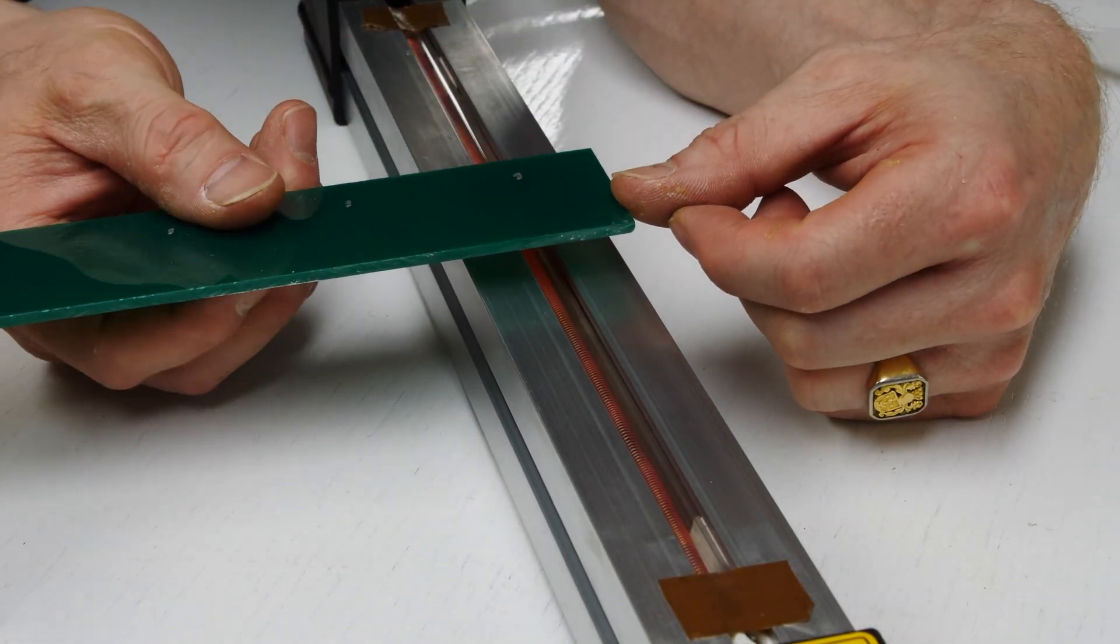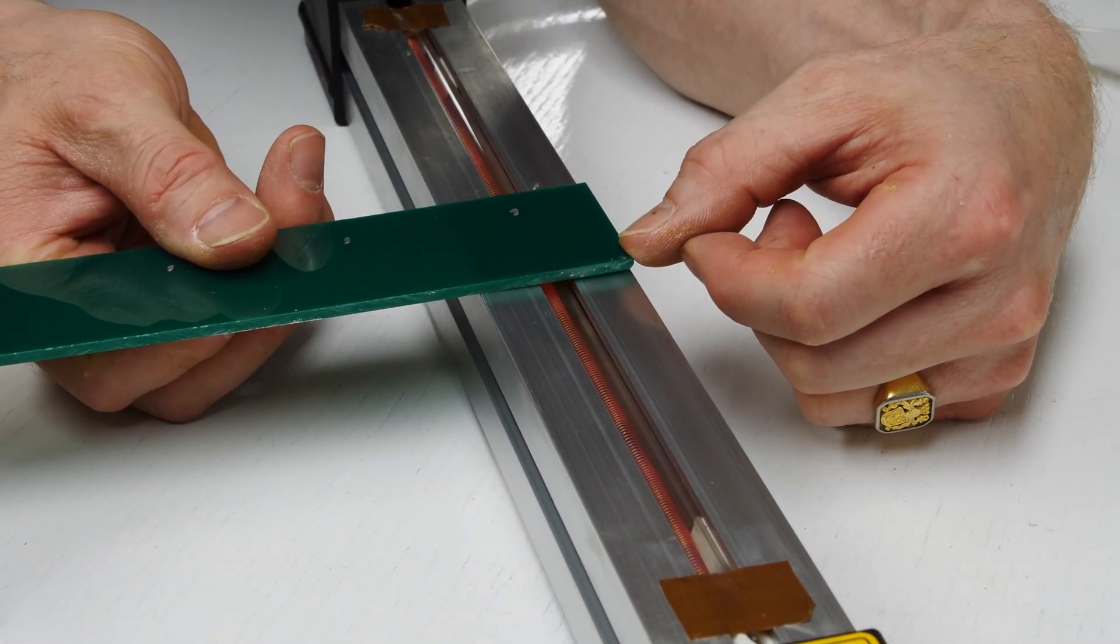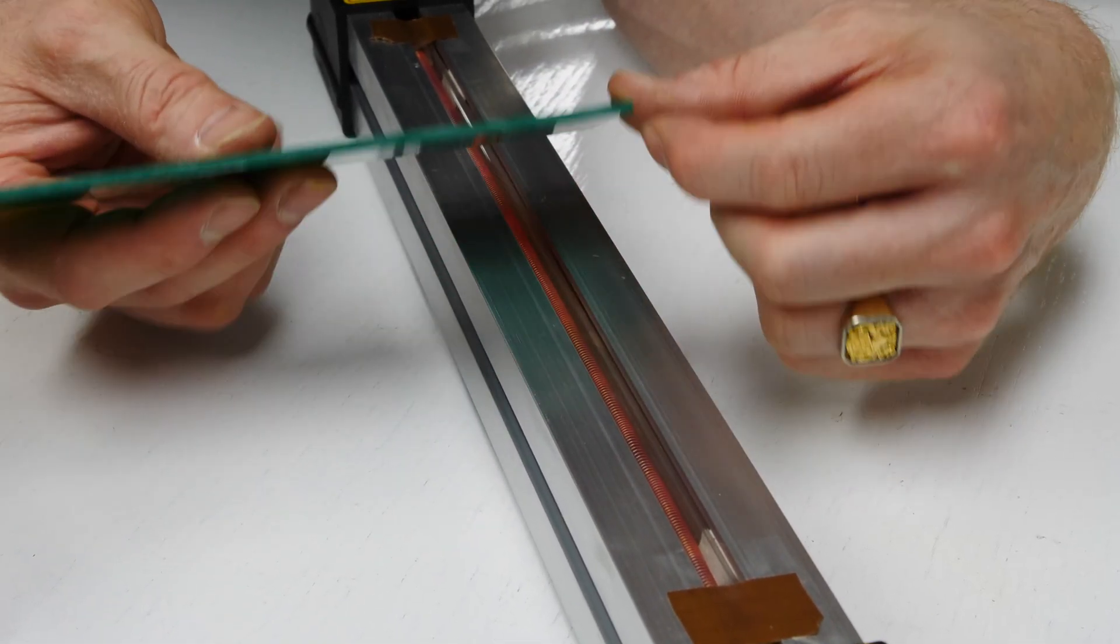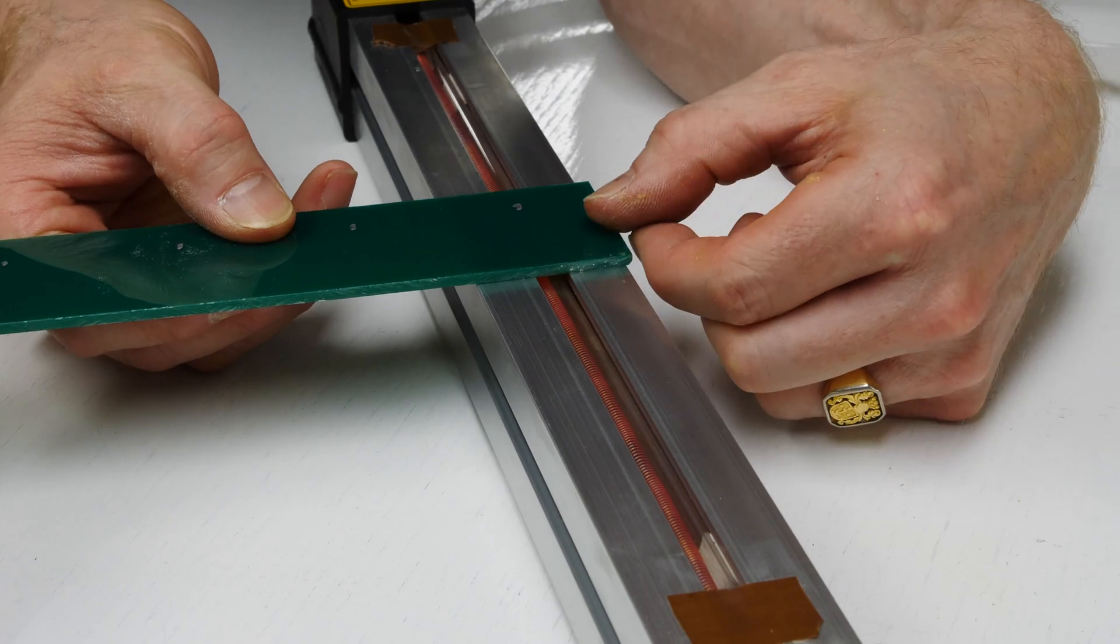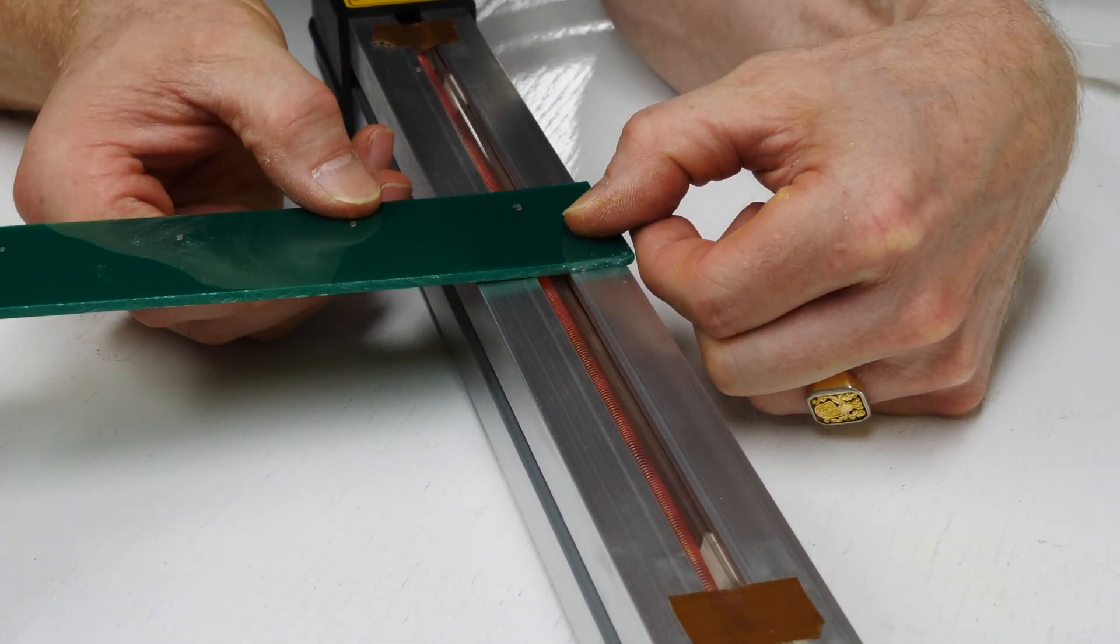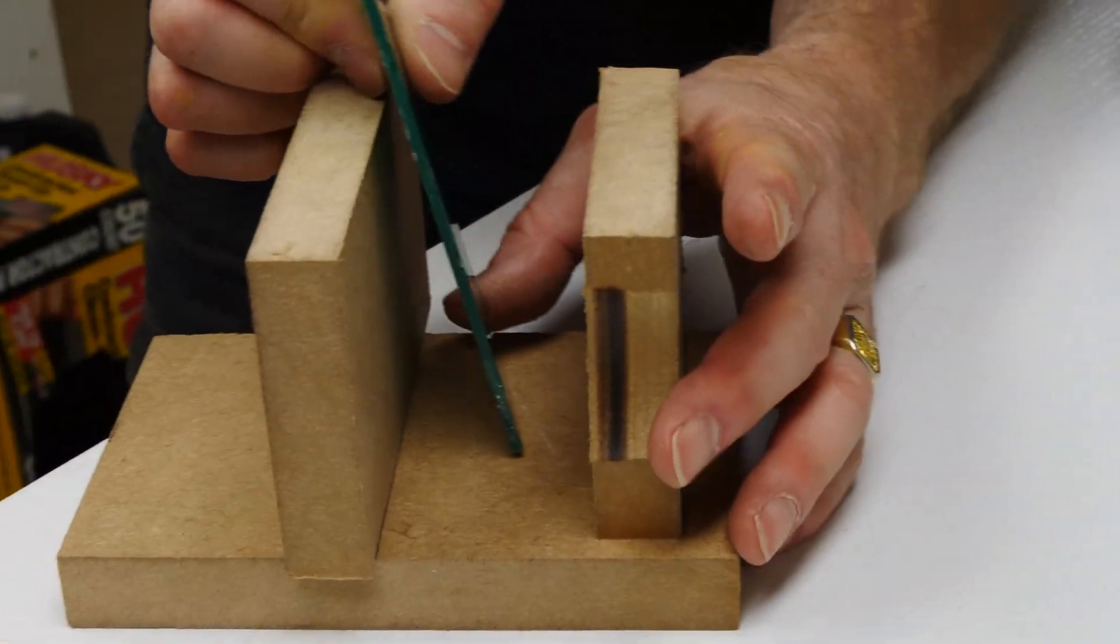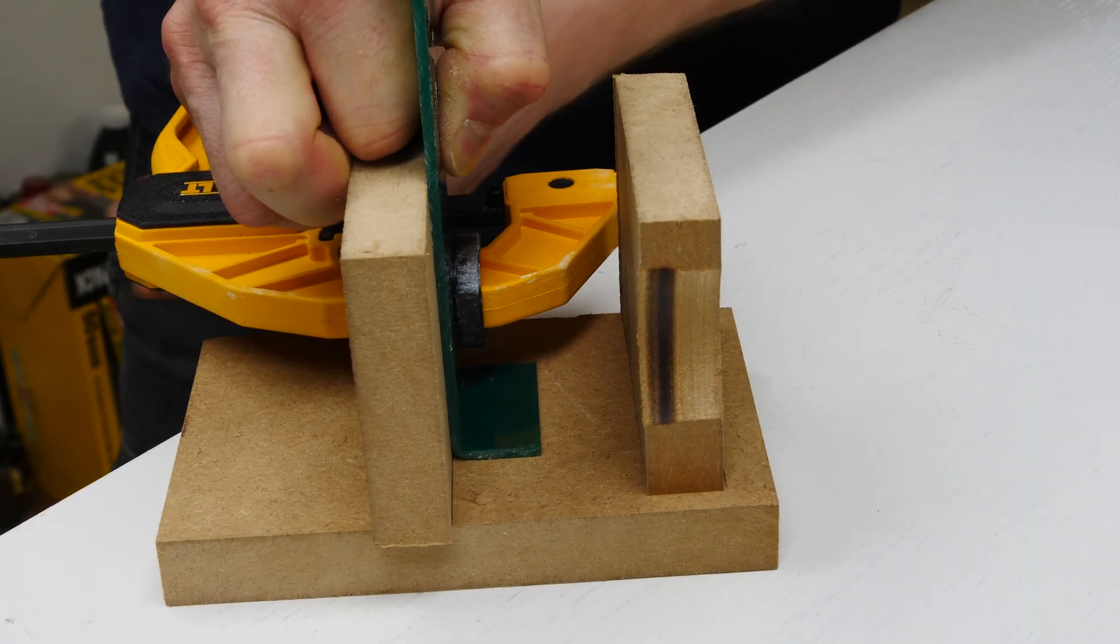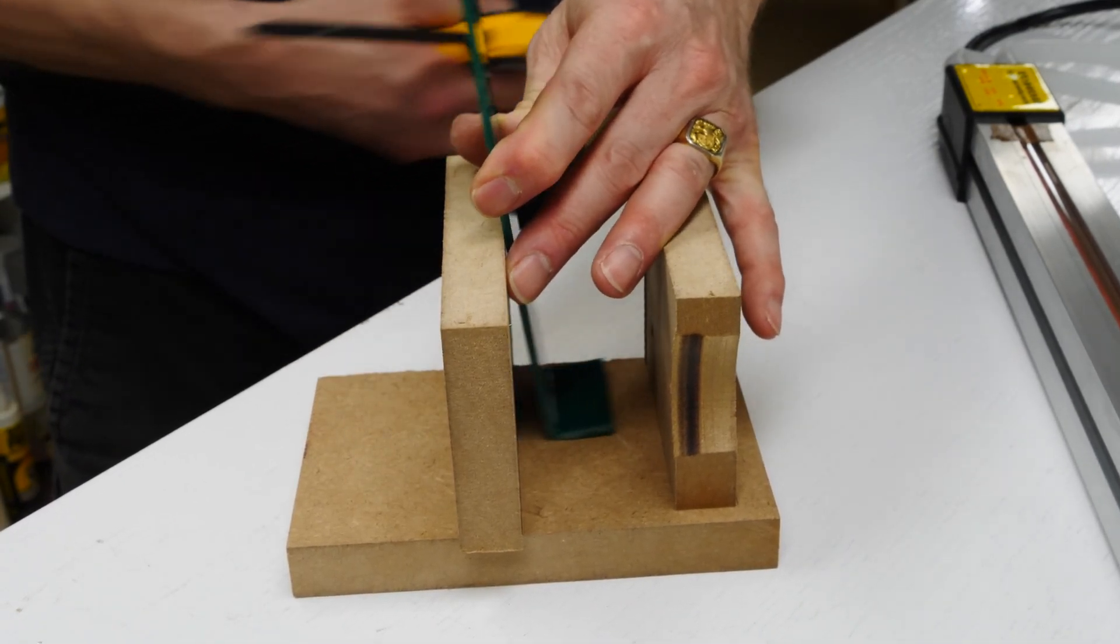I'm going to mark off the radius points on the piece of acrylic and then set the acrylic onto our heat bender. I'm going to flip it over so that I can heat both sides of the acrylic and get a nice bend.